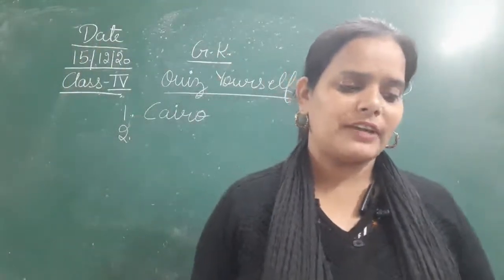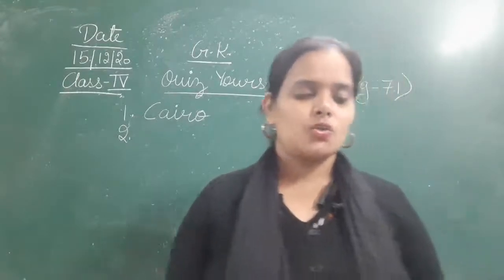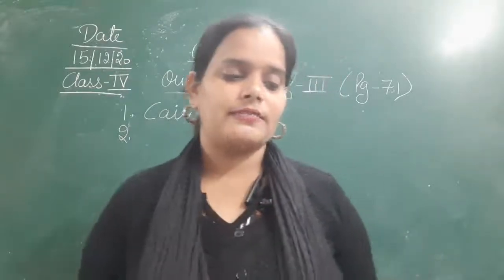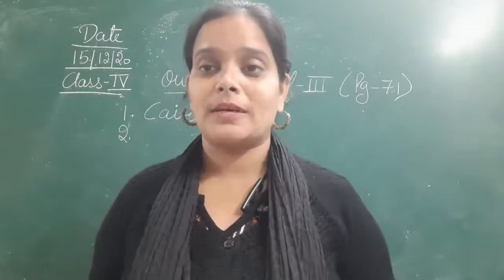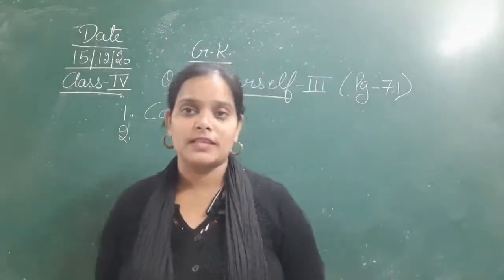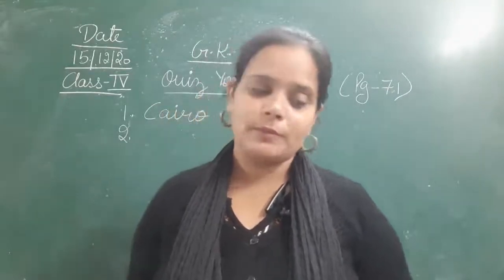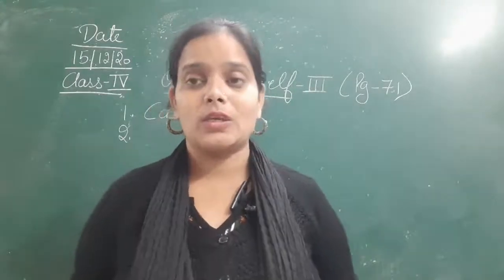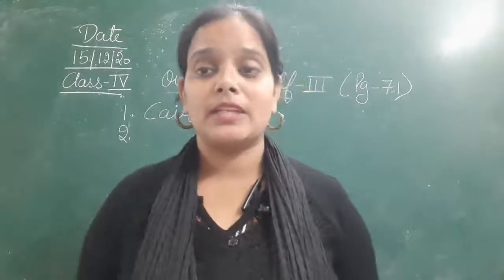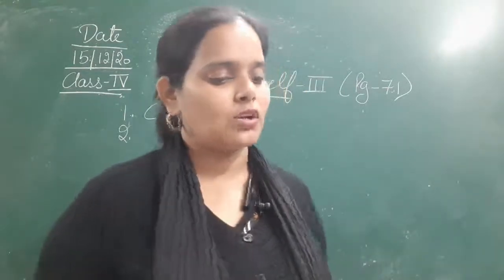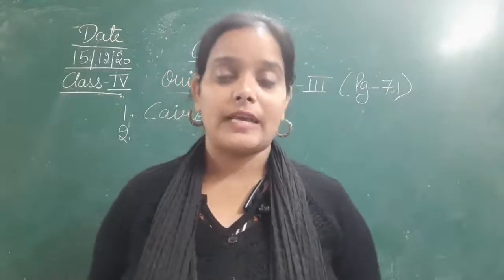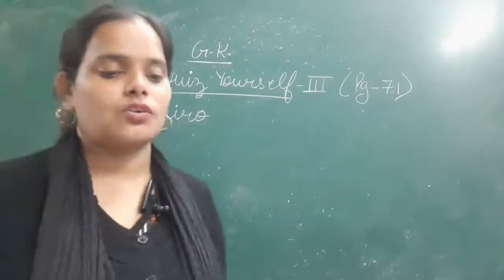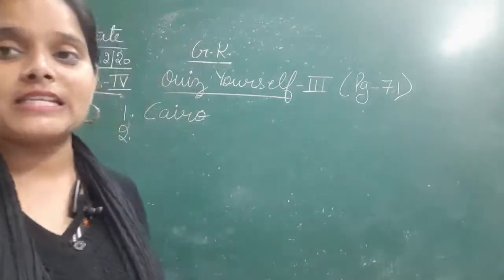The second question is: who is the author of Five Point Someone and Two States? These are the names of two very famous novels. There are movies also made on Two States. So who is the author of these two famous novels? That is Chetan Bhagat. He is an Indian author, and his name is Chetan Bhagat. So Chetan Bhagat is the author of Five Point Someone and Two States.